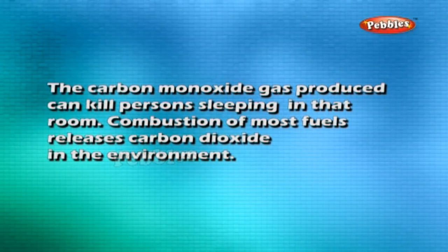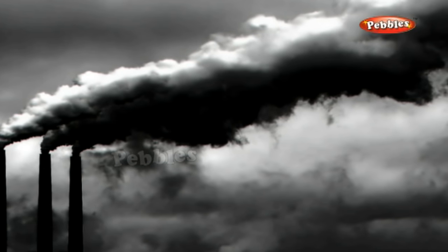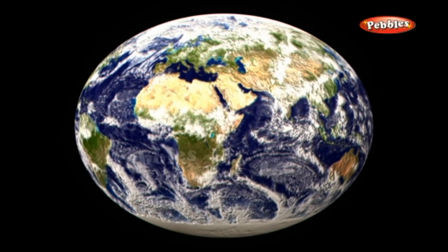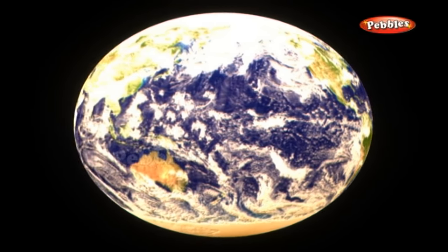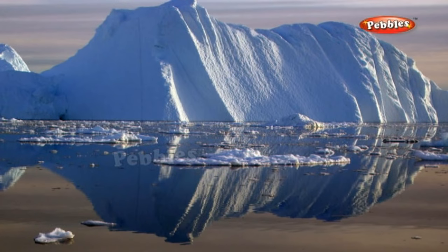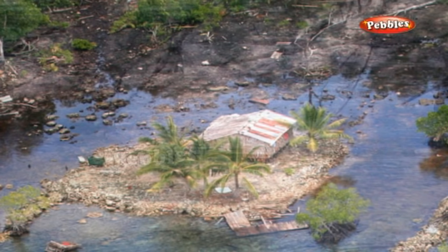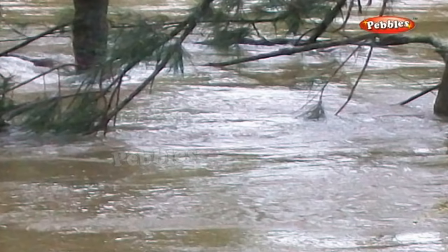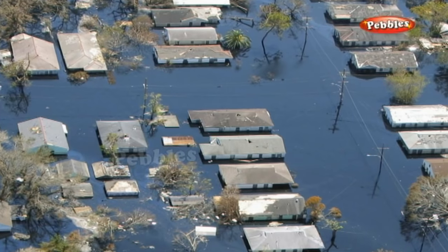Combustion of most fuels releases carbon dioxide into the environment. Increased concentration of carbon dioxide in the air is believed to cause global warming — the rise in temperature of the atmosphere of the earth. This results, among other things, in the melting of polar glaciers, which leads to a rise in sea level causing floods in coastal areas. Low-lying coastal areas may even be permanently submerged underwater.